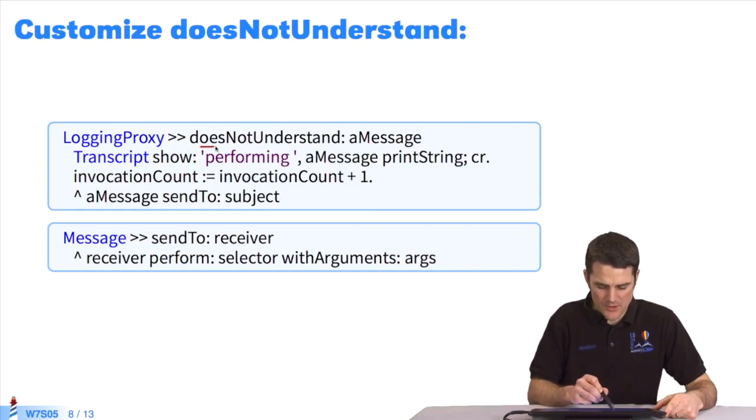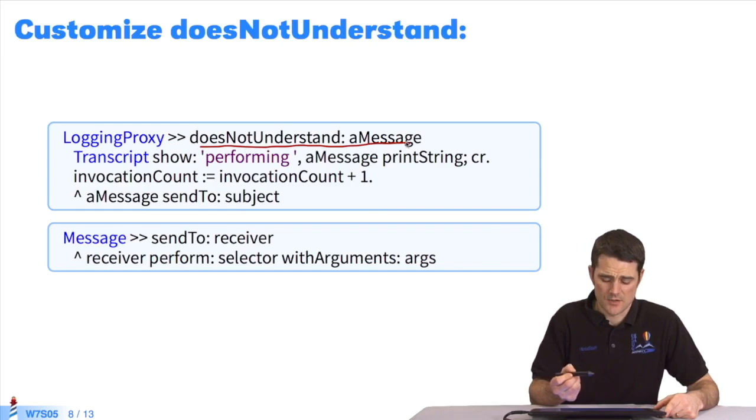Now we redefine the DNU method on this proxy. Every time a new message is not understood, its reception appears on the transcript, and the counter is incremented. Then we forward the message to the subject.